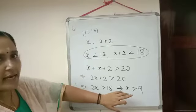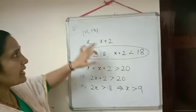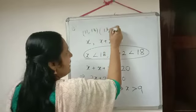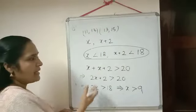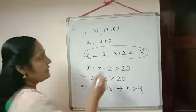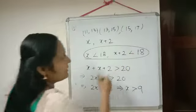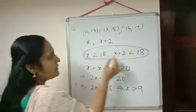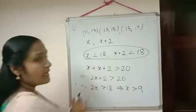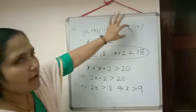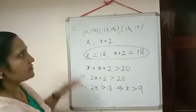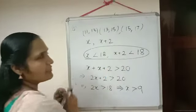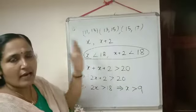So first condition gives x greater than 9, so we take odd numbers greater than 9 and write them in pairs. Next is 13 comma 15 — their sum is also more than 20 and both are less than 18. Next pair: 15 comma 17 — also satisfying. Can we write 17 comma 19? No, because both numbers should be smaller than 18. So the answer is the pairs 11 comma 13, 13 comma 15, and 15 comma 17.